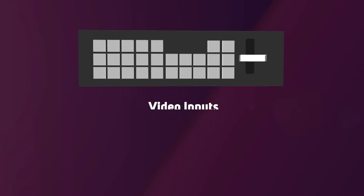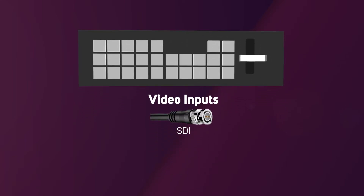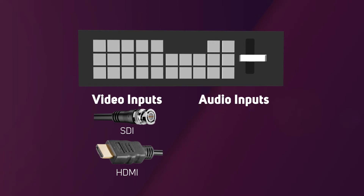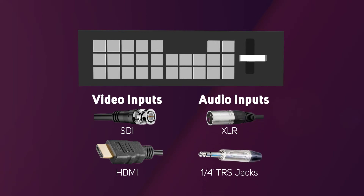Each mixer will feature a variety of different inputs and outputs and will also support specific formats. The most common connections you'll see are SDI and HDMI, as these are standards within live production environments. You'll also find common professional audio connections like XLR and quarter inch TRS jacks, so you can take an output from an audio mixing console and combine your audio and video.